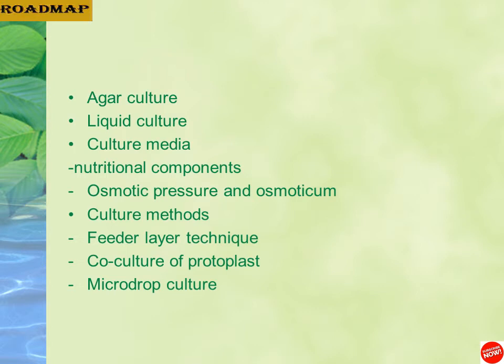There are special features of protoplast culture media. First, the medium should be devoid of ammonium and the quantities of iron and zinc should be less. Second, the concentration of calcium should be two to four times higher than that used for cell culture, for membrane stability. Third, a high auxin-to-cytokinin ratio is suitable to induce cell divisions, while a high cytokinin-to-auxin ratio is required for regeneration. Fourth, glucose is the preferred carbon source, although a combination of glucose and sucrose can be used.